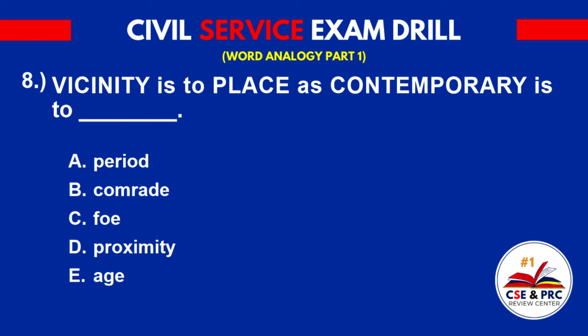Number 8: 'Vicinity' is to 'place' as 'contemporary' is to blank. A. Period. B. Comrade. C. Faux. D. Proximity. E. Age. The answer is D. Proximity.